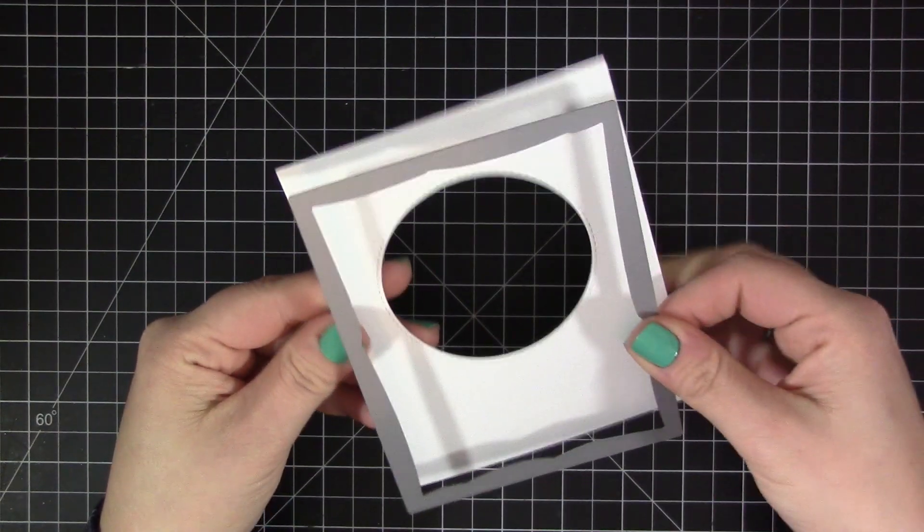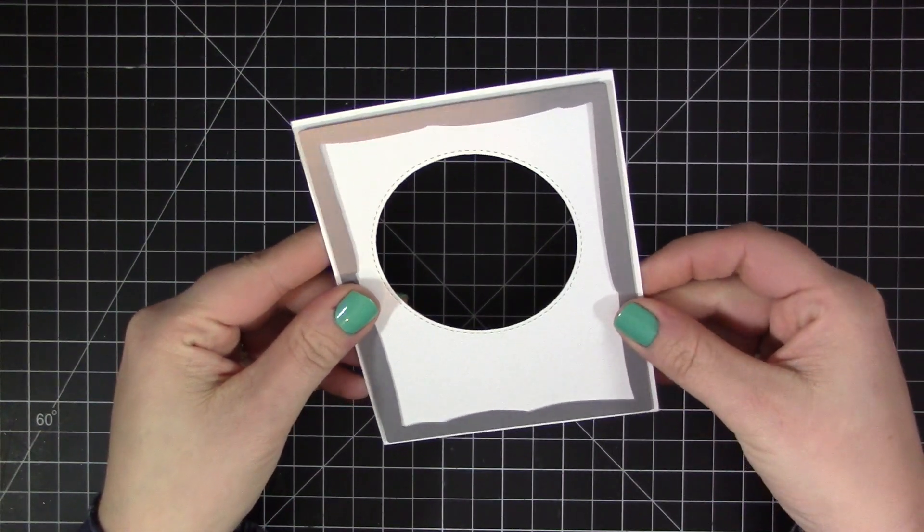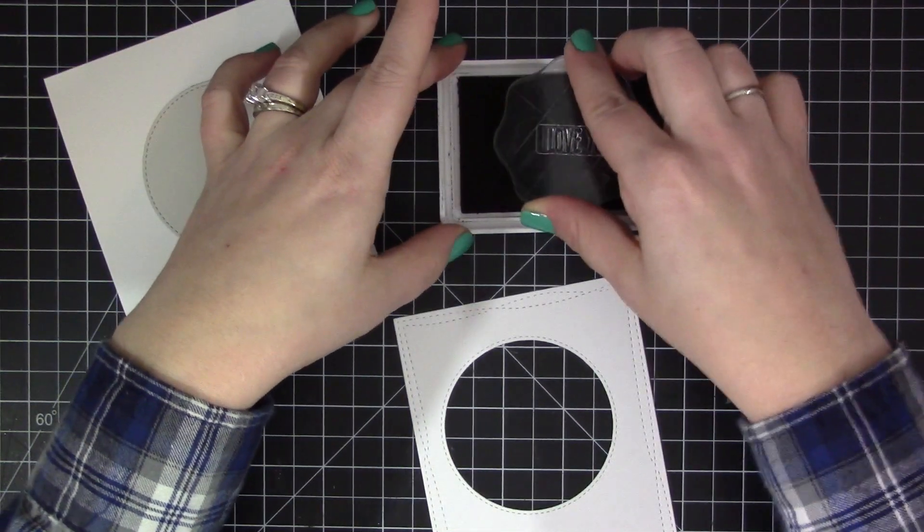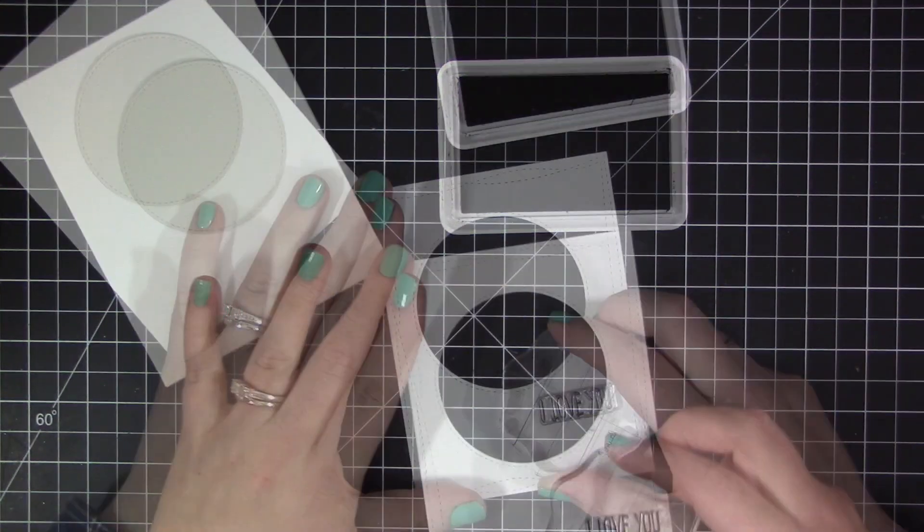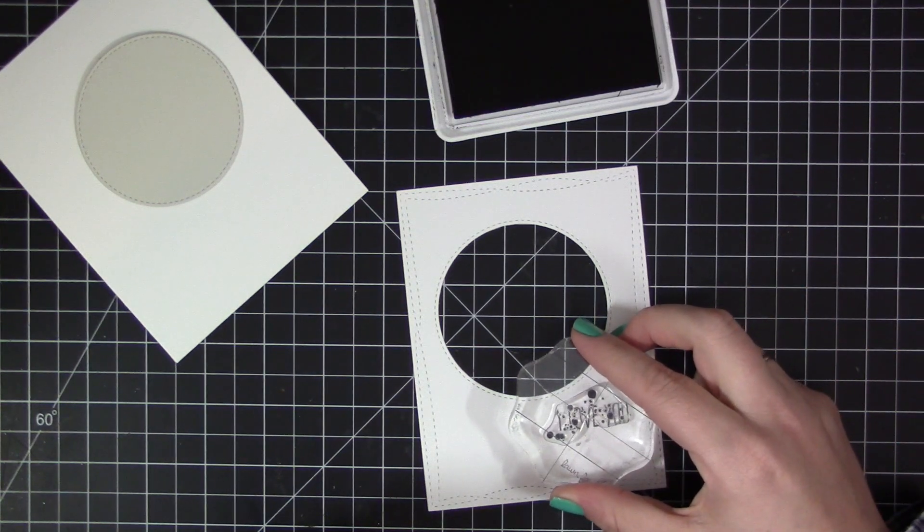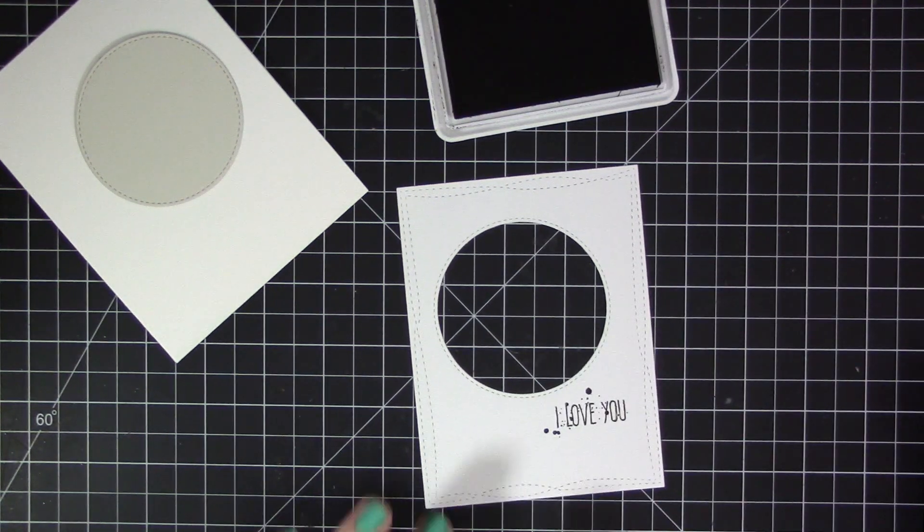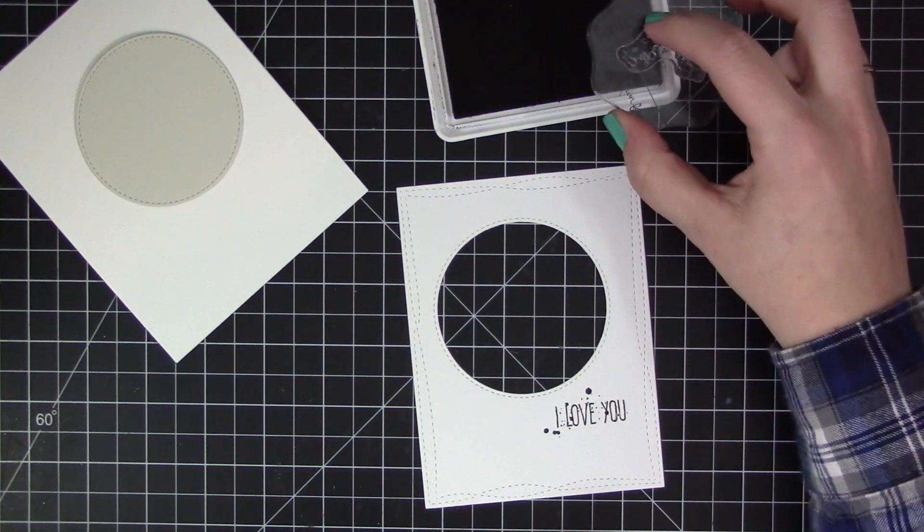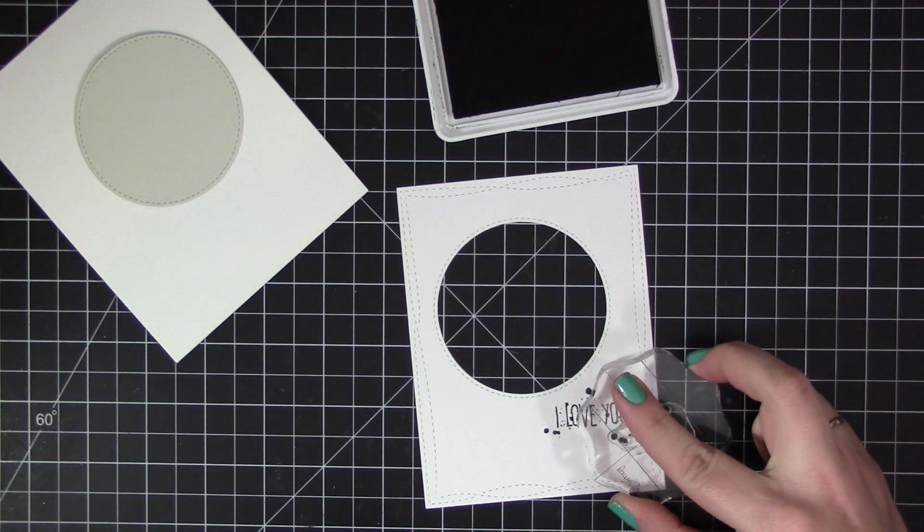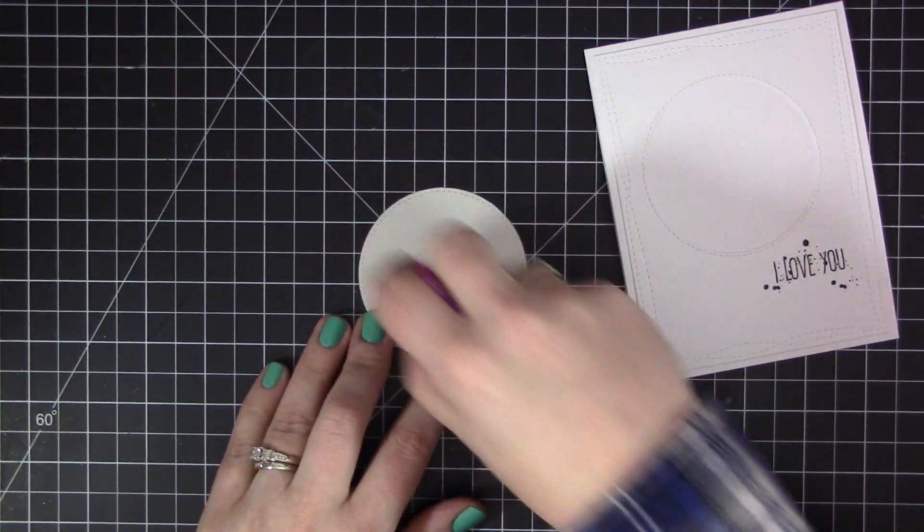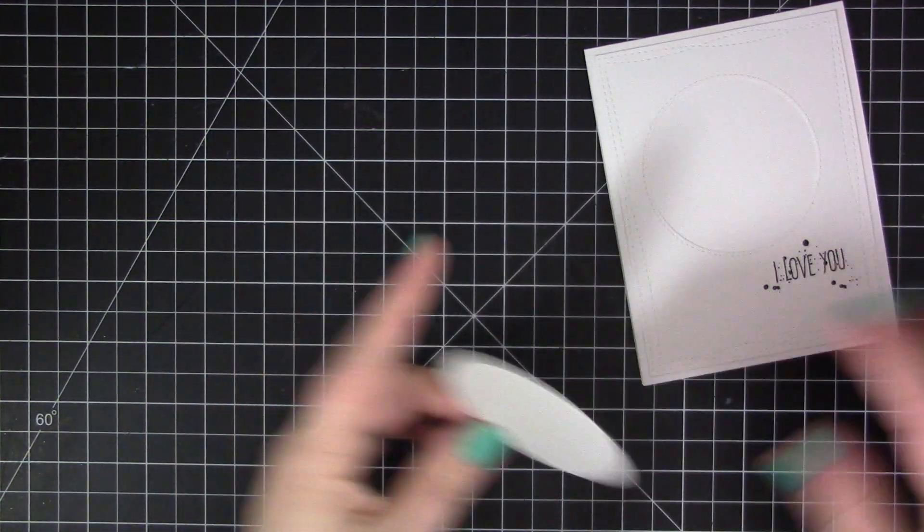Now for the second card I'm going to use that negative piece that I had from the first card. I used the Wonky Stitched Rectangle Stacks on the outside of this piece just to give it a little bit of stitch detail. Then I'm adding the same sentiment and the same paint splatter stamp to the sentiment area. I added a little bit more of that paint splatter just because I felt like it needed a little bit more splatter down on the right bottom piece of that card.